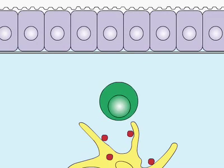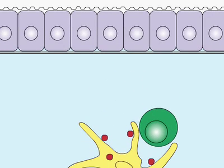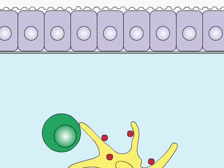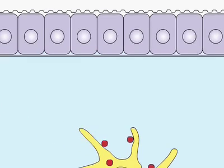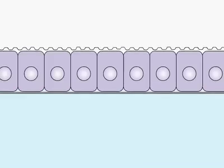The naive T-cell can now inspect dendritic cells in the lymph node for the presence of its specific antigen. If it does not recognize antigen, the T-cell is not activated and passes out of the lymph node to return to the circulation.